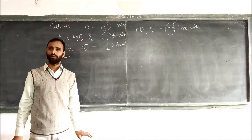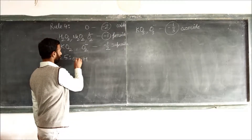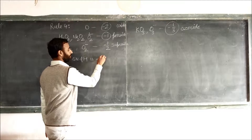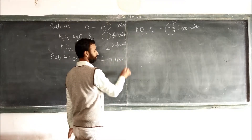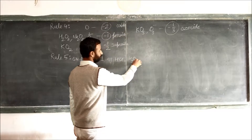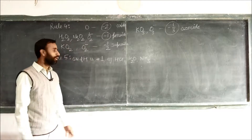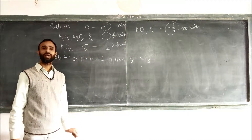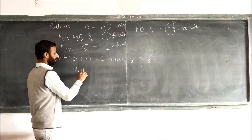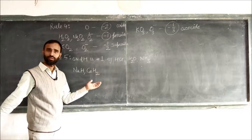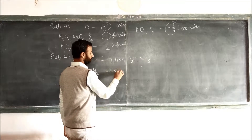Rule number five: hydrogen in most of its compounds has oxidation number plus one. For example, in HCl, H2O, and H3O⁺, the oxidation number of hydrogen is plus one. But when hydrogen is combined with metals, such as in metallic hydrides like sodium hydride and calcium hydride, the oxidation number of hydrogen is minus one.